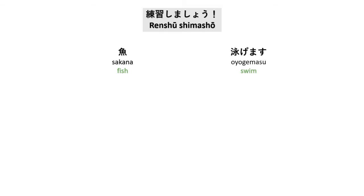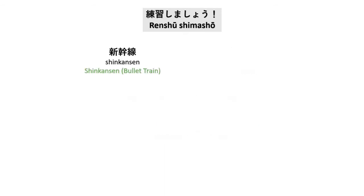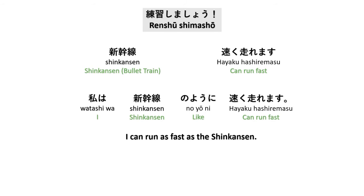Let's practice combining words using のように or のような. For example: Watashi wa sakana no yoni oyogemasu — I can swim like a fish. Another example: Watashi wa shinkansen no yoni hayaku hasiremasu — I can run as fast as the shinkansen.